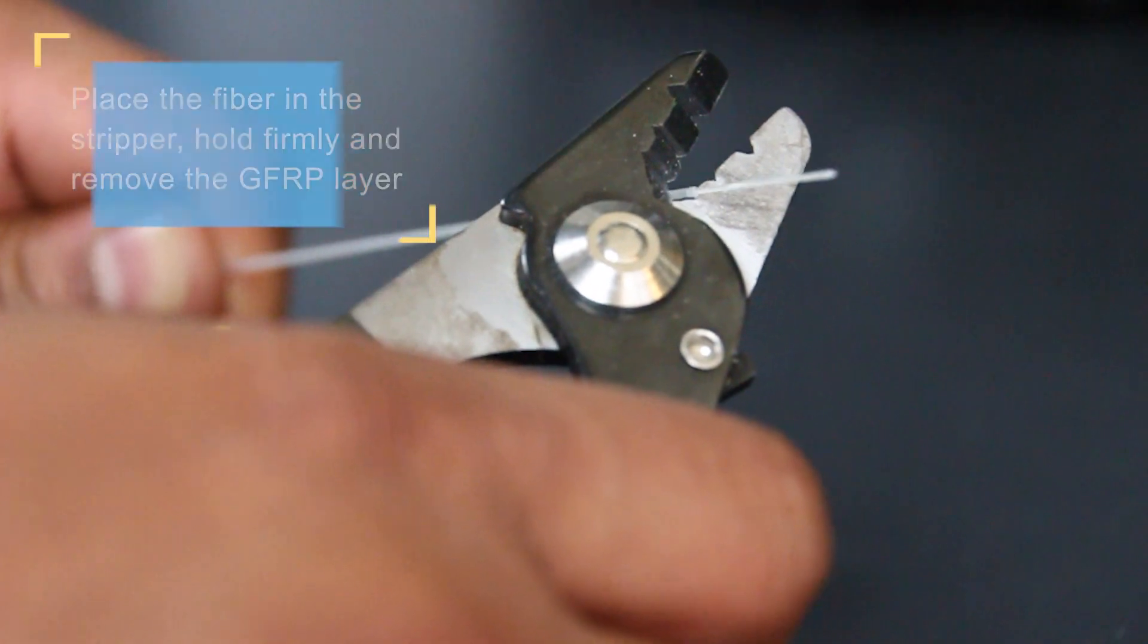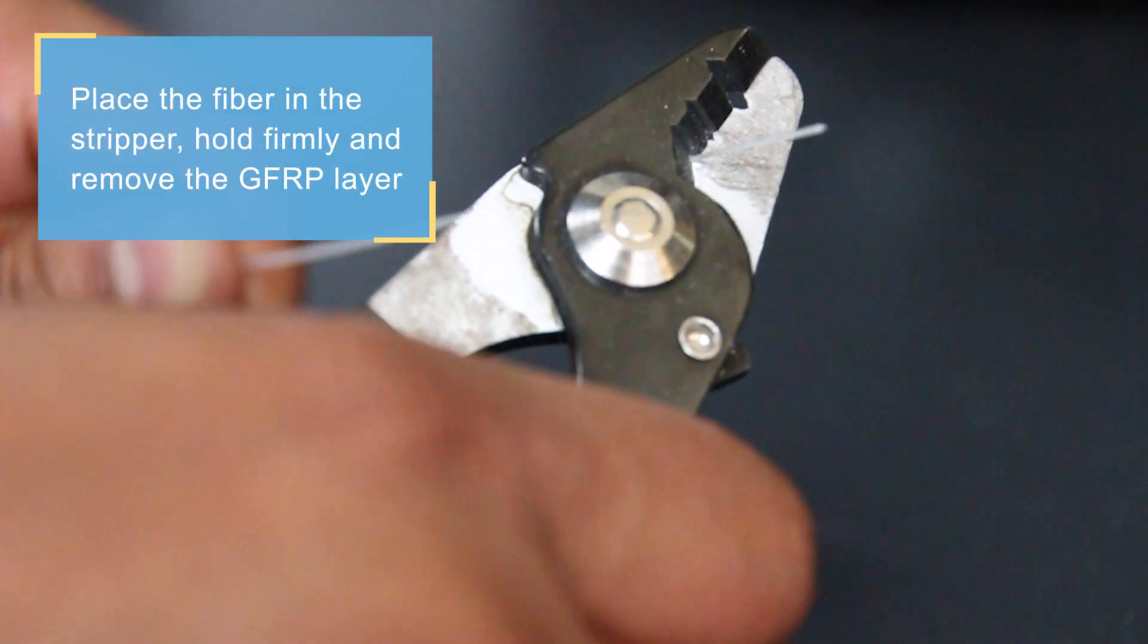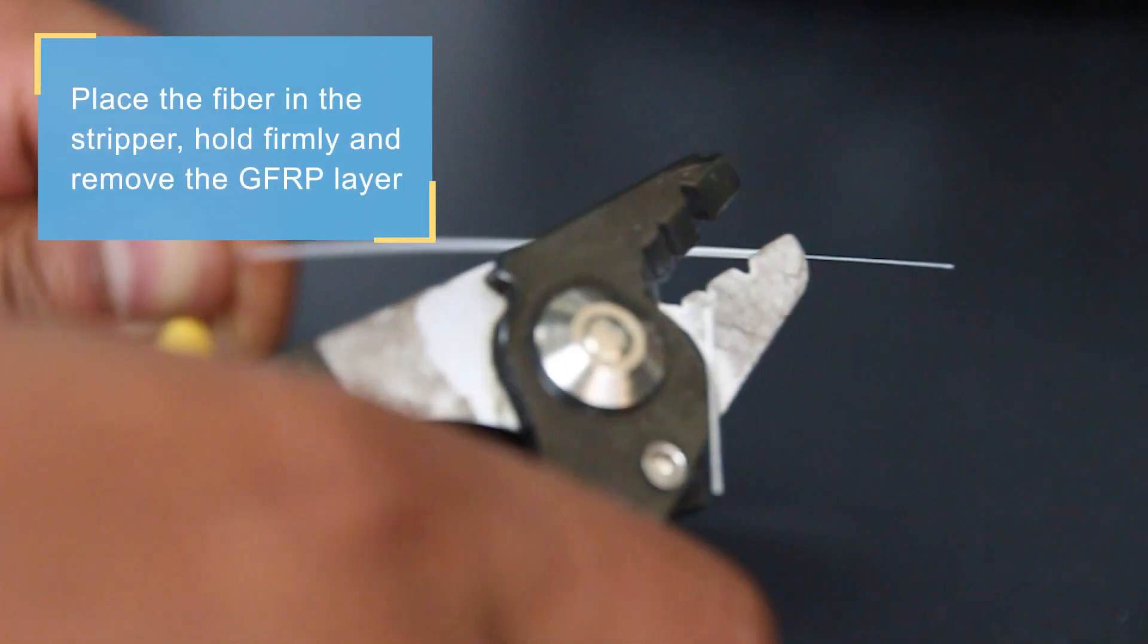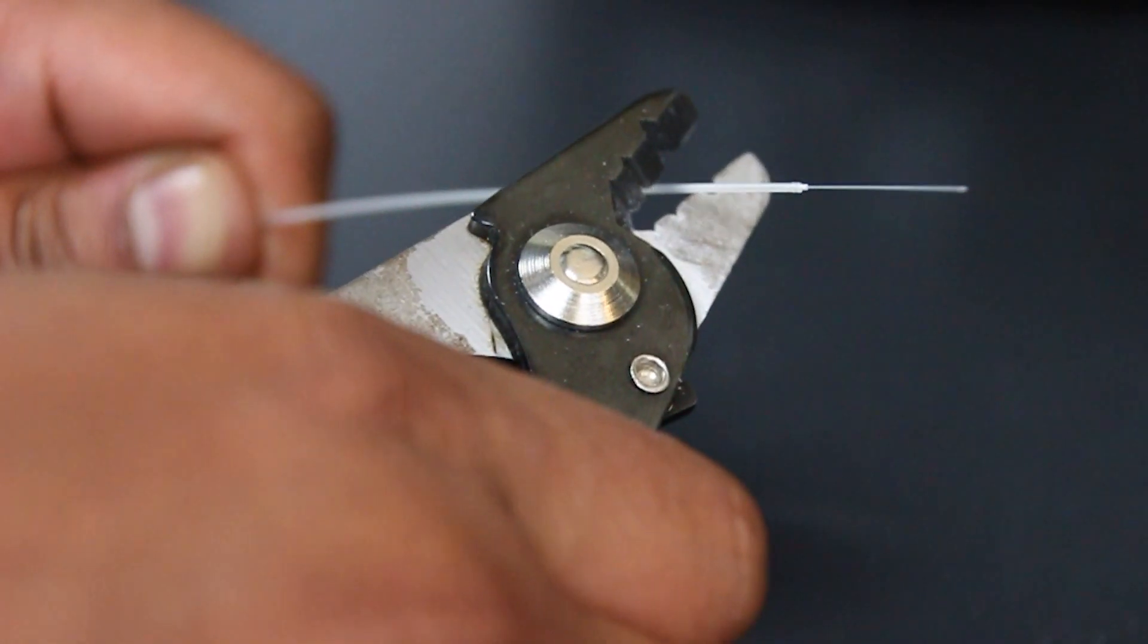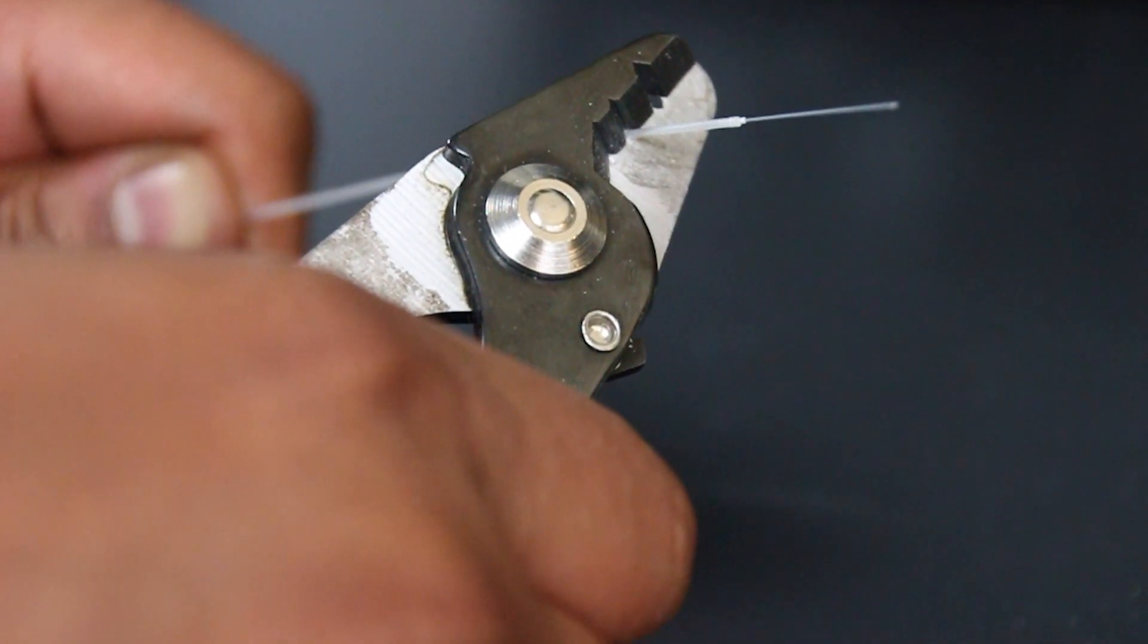Now, the GFRP layer. Place the fiber in the smallest groove of the stripper. Press enough to cut through the second layer. Hold firmly and strip the encapsulation.